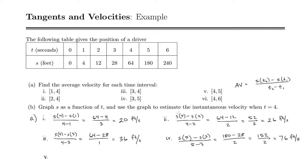Now we'll do 5. Between 4 and 5. So we do s of 5 minus s of 4 over 5 minus 4. So that's 180 minus 64 over 1. And that's going to be 116 feet per second.